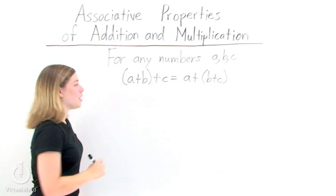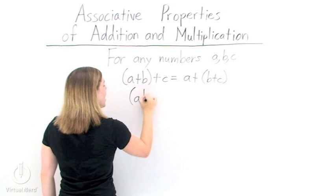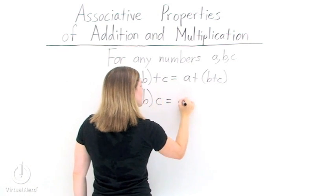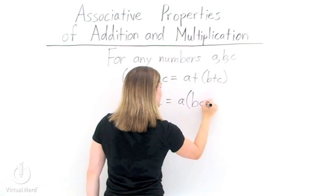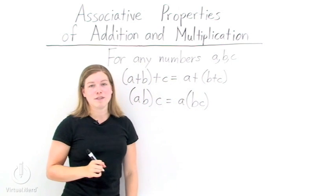Same thing goes with multiplication. If we multiply A times B first and then C, we can use the associative property of multiplication to multiply B times C first instead.